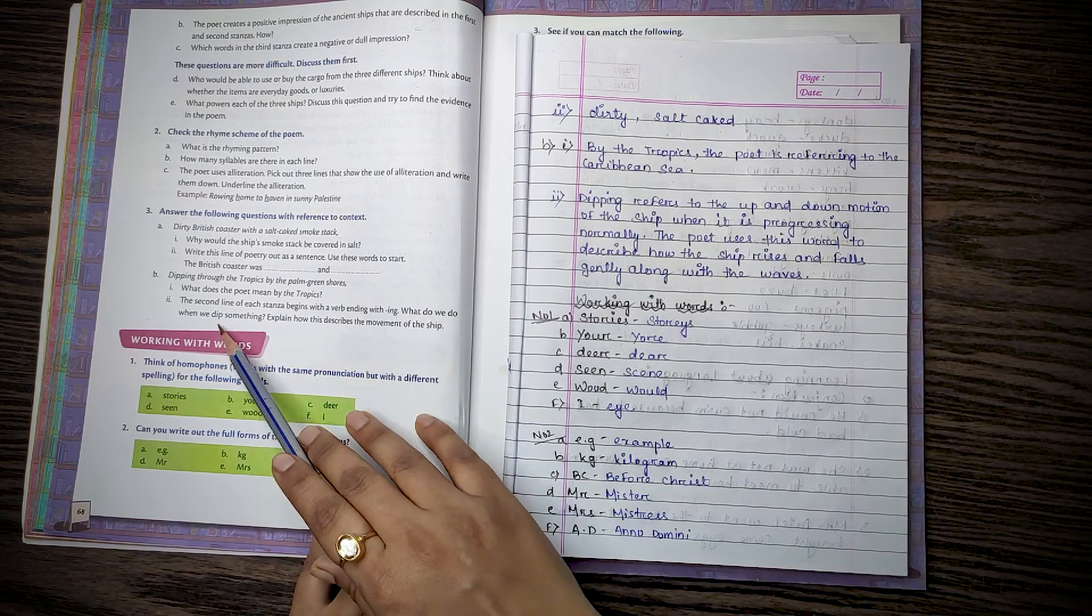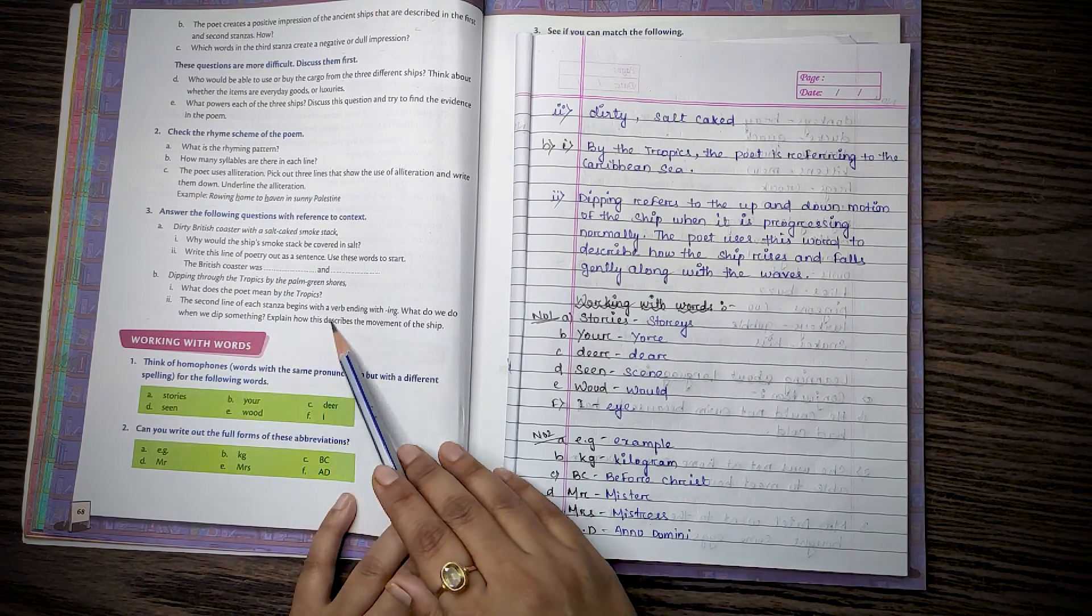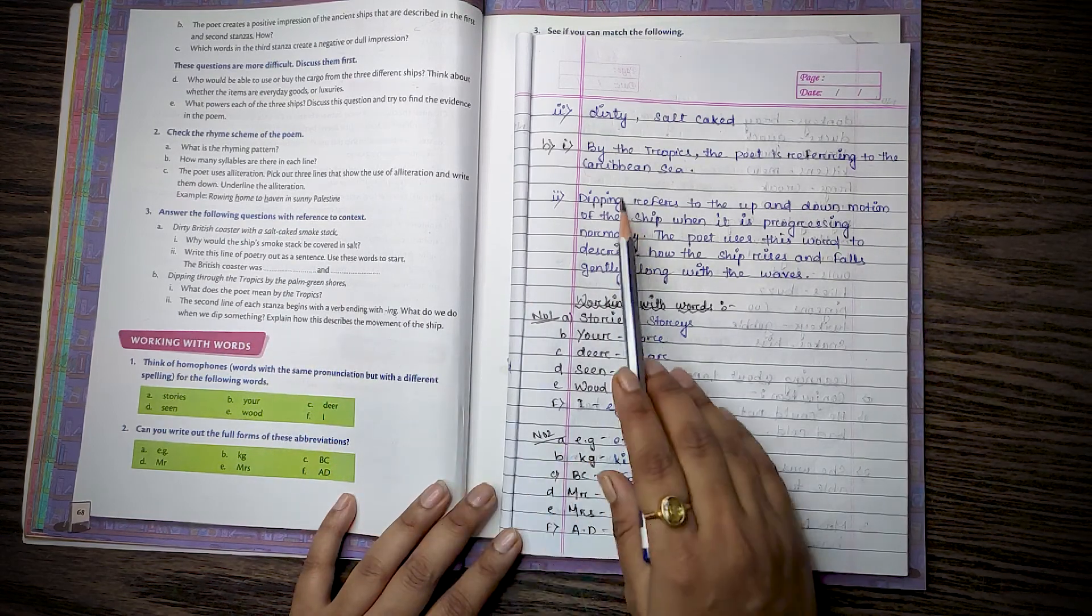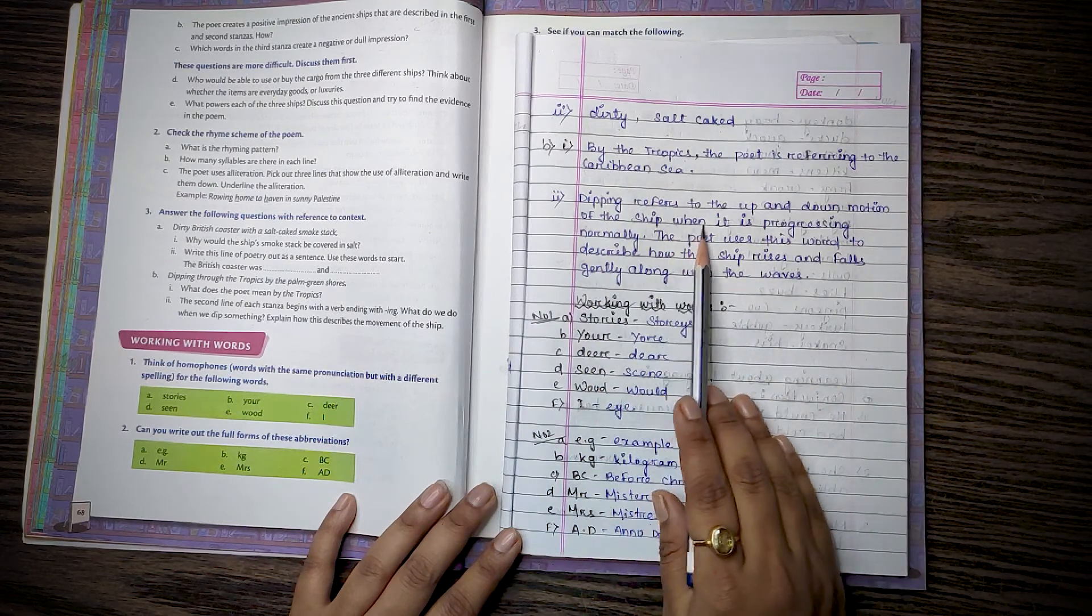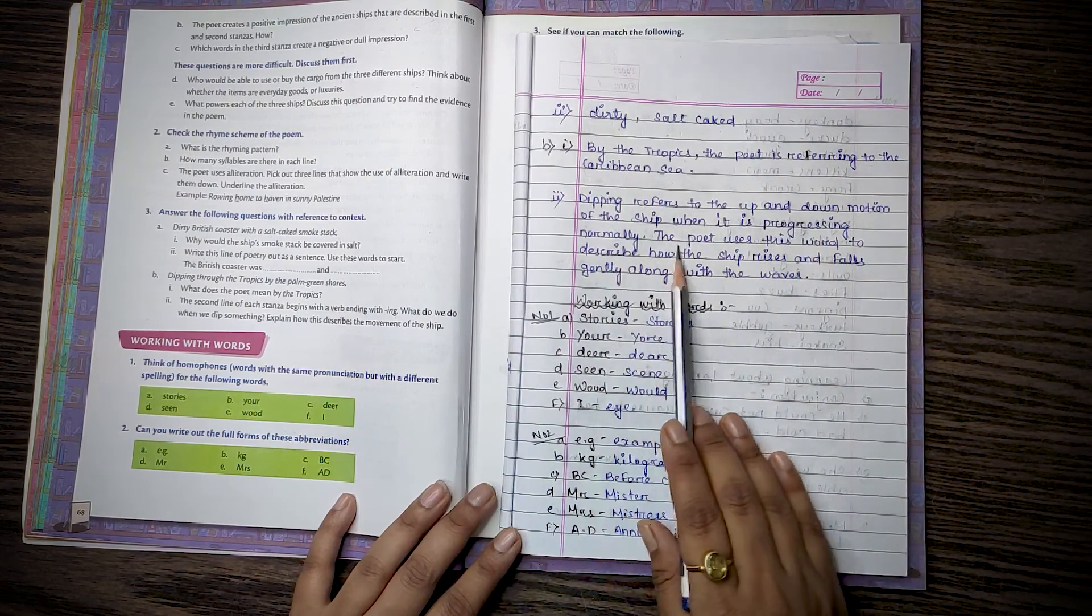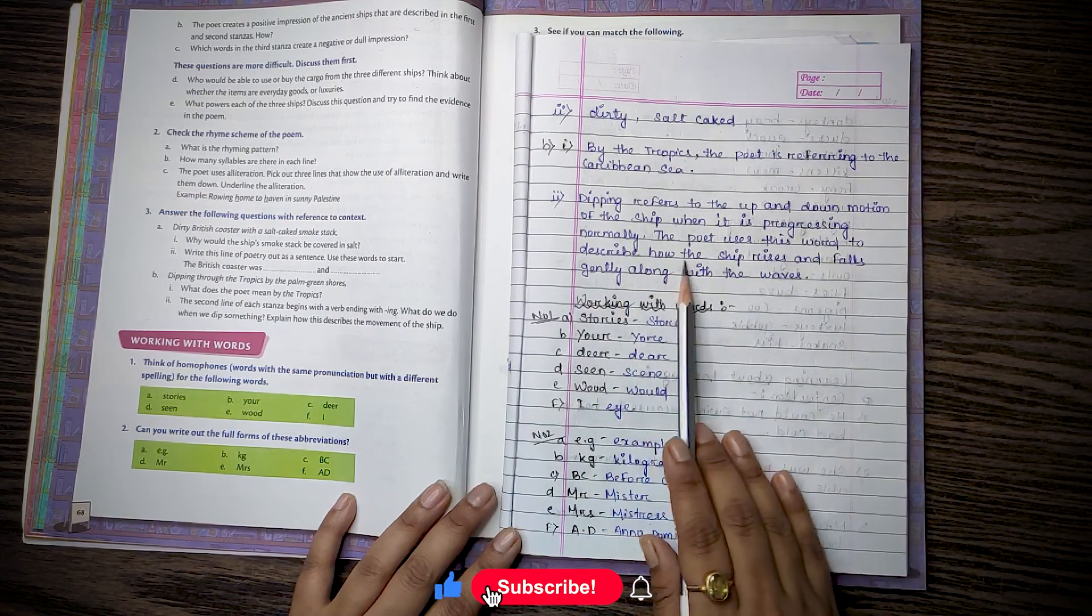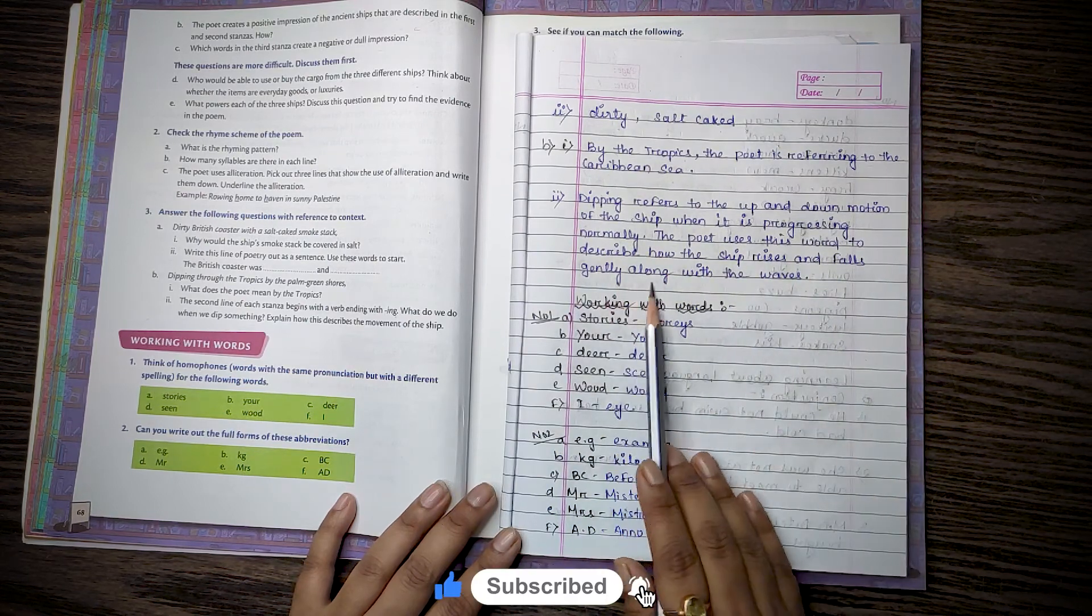What do we do when we dip something? Explain how to describe the movement of the sea. Dipping refers to the up and down motion of the sea when it is progressing normally. The poet uses this word to describe how the sea rises and falls gently along with the waves.